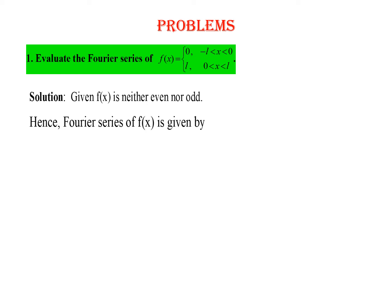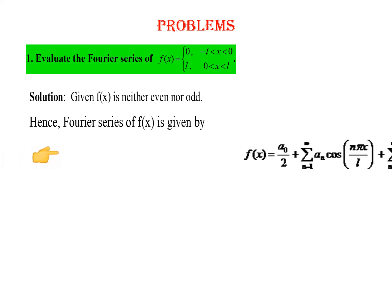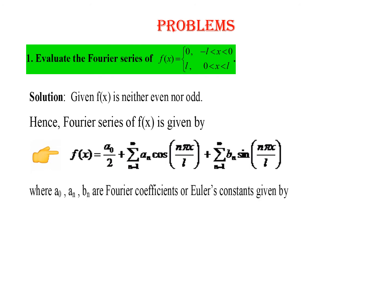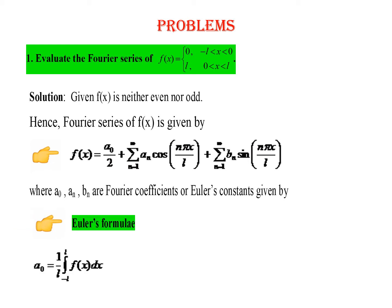Since the function is neither even nor odd, the Fourier series contains all three terms: f(x) = A₀/2 + Σ Aₙ cos(nπx/L) + Σ Bₙ sin(nπx/L). We will find all the Fourier constants A₀, Aₙ, and Bₙ using Euler's formulas.